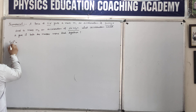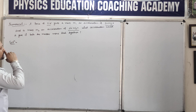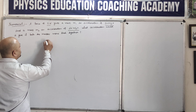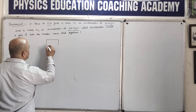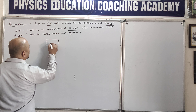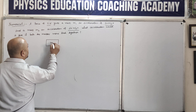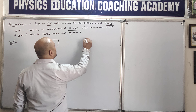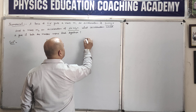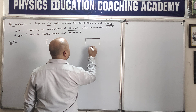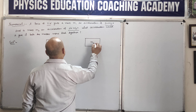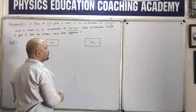So how do we do this numerical? Suppose this is the first object having mass M1, and this is the second object having mass M2.